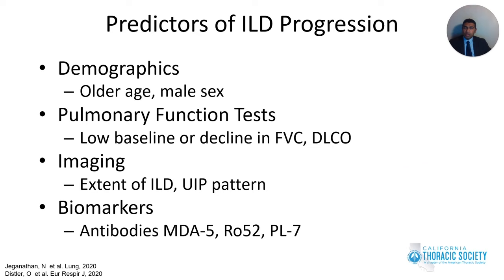Certain factors are predictive of ILD progression. Baseline characteristics include development of ILD at an older age and male gender. Low baseline FVC and DLCO with rapid progression in a short duration are also predictive of poor prognosis. The extent of ILD and presence of a UIP pattern on imaging predict likelihood of progression. Certain antibodies — MDA5, Ro52, and PL7 — have been associated with higher likelihood of ILD progression.